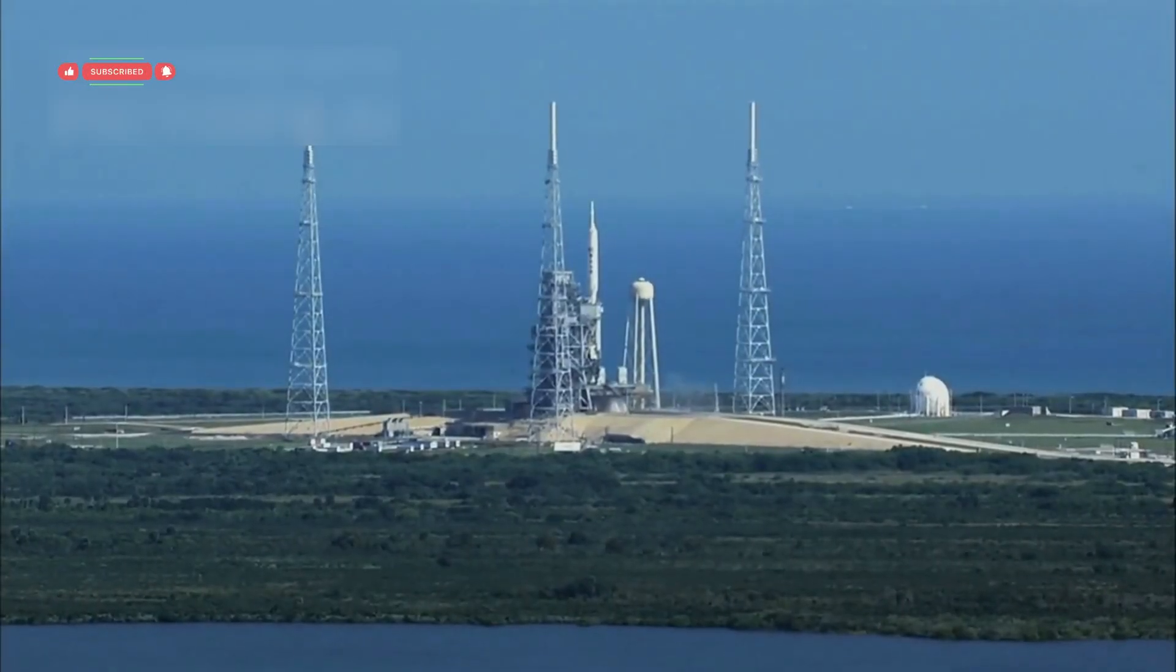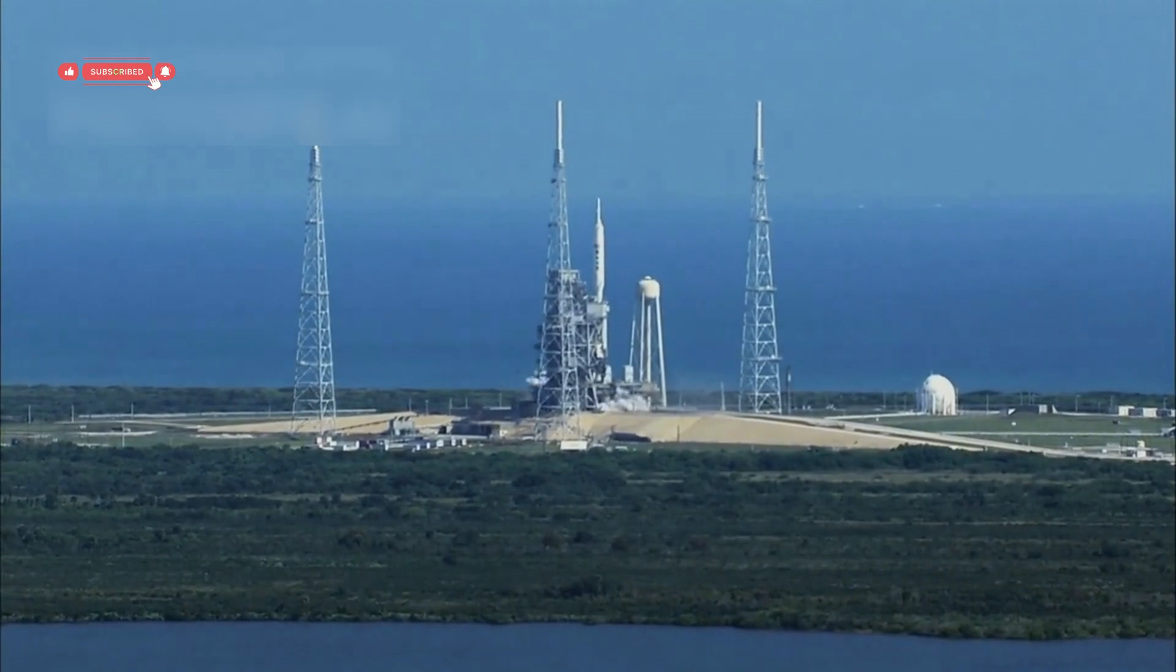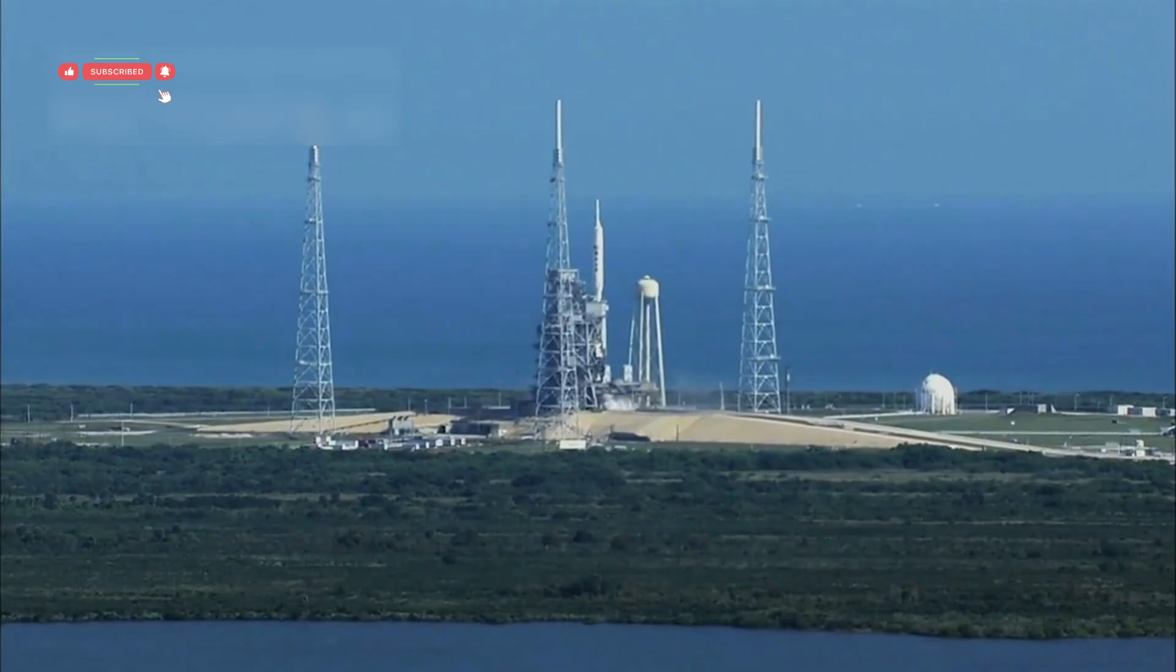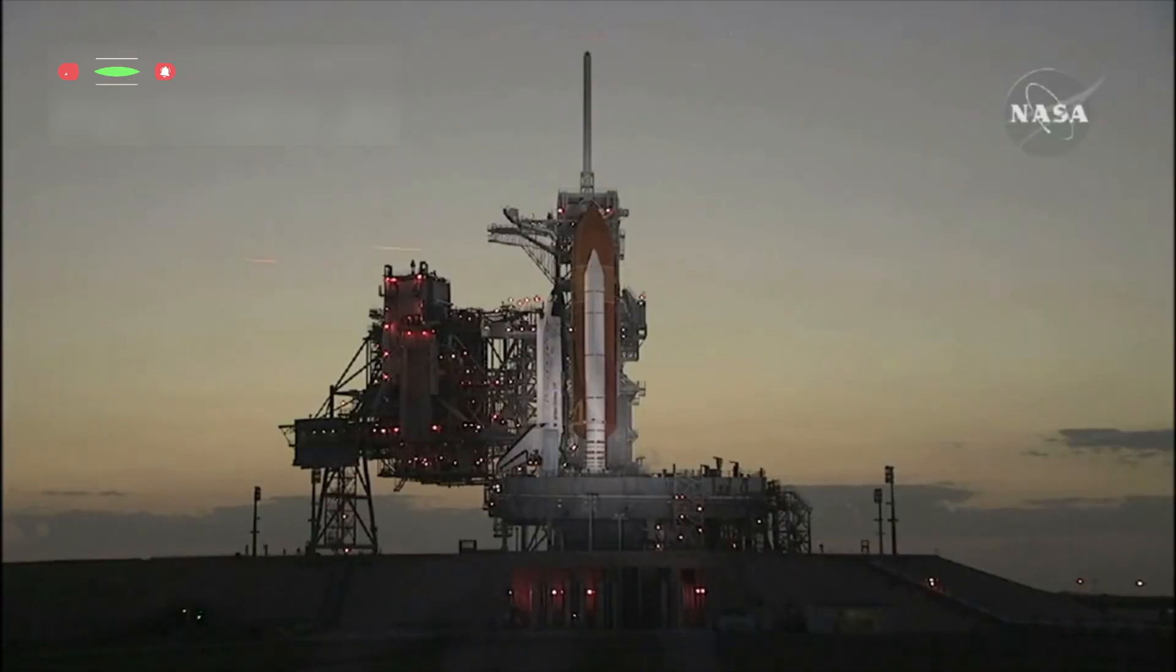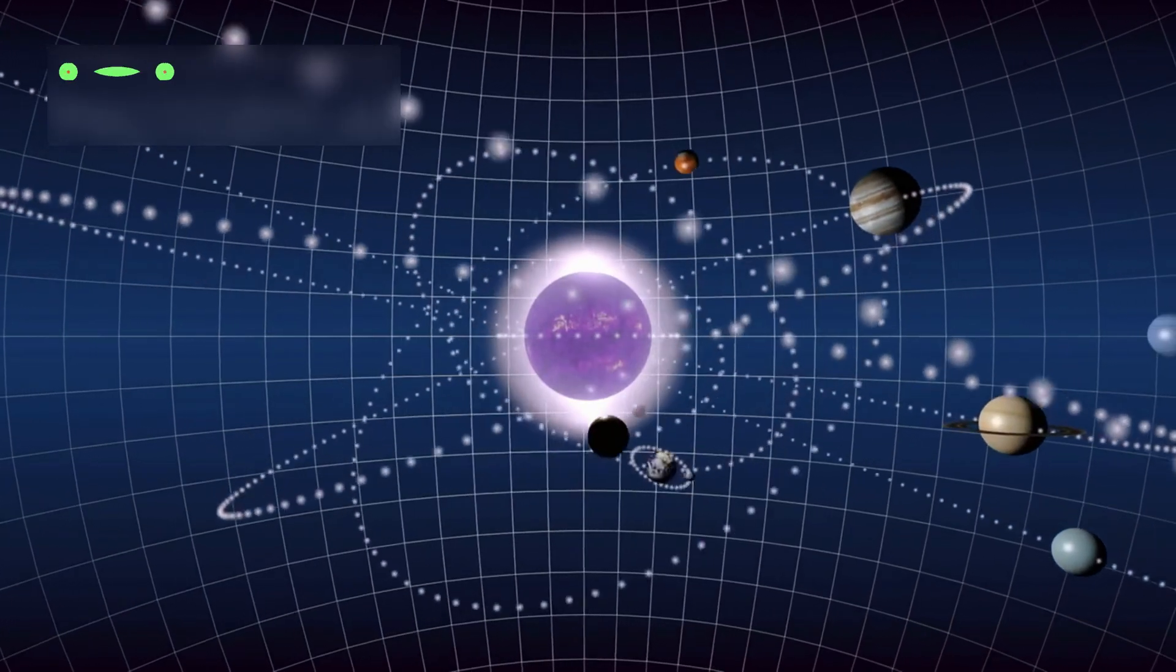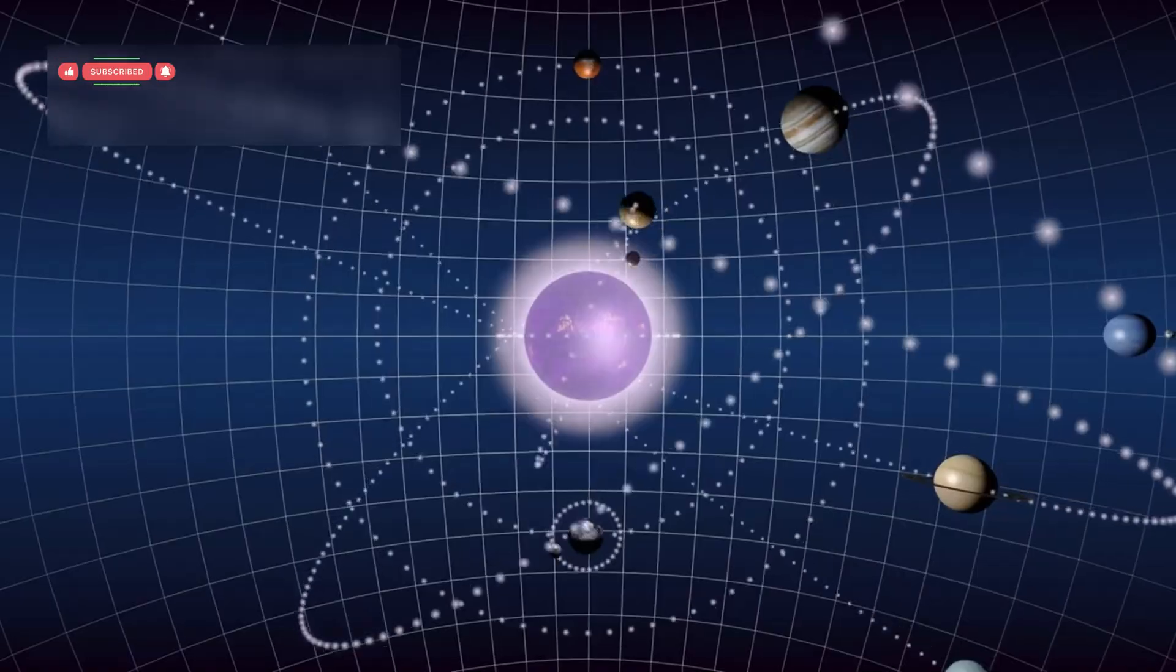Voyager 1 launched on September 5, 1977 from Cape Canaveral, Florida, aboard a Titan rocket. Voyager 2 had lifted off just 13 days earlier. The original mission was simple: study the giant planets of the solar system.